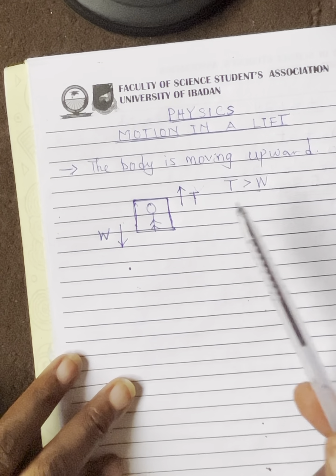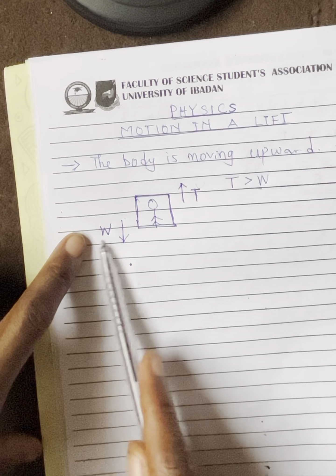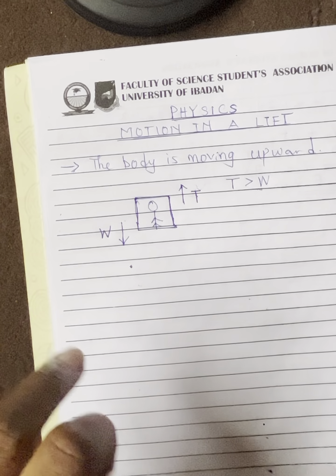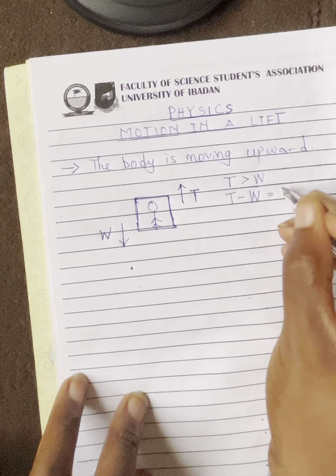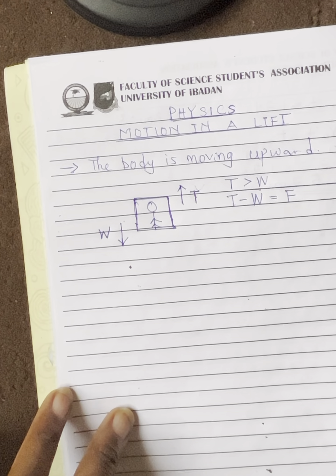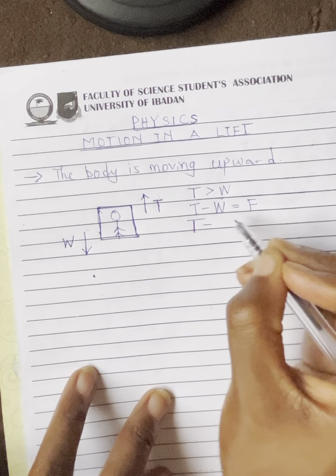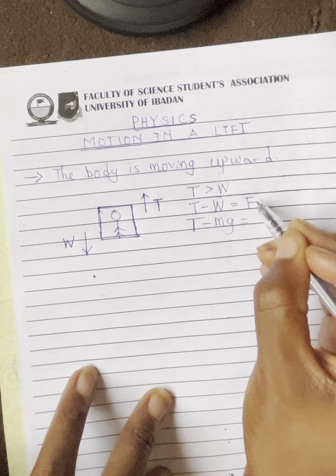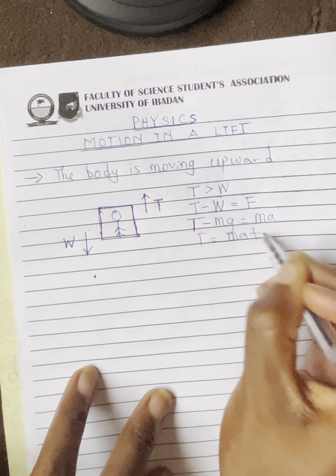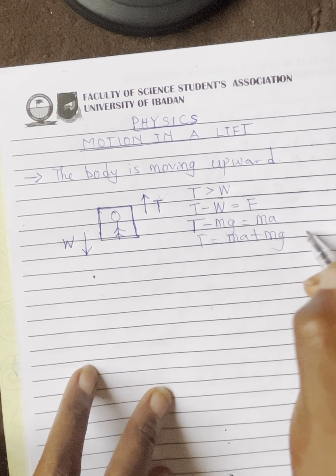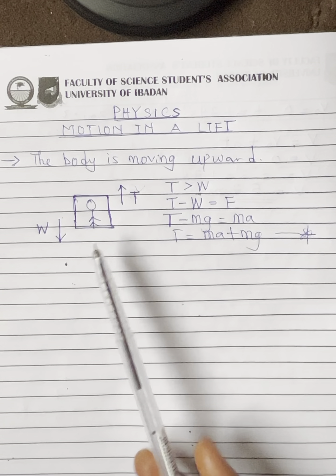So if I want to calculate the force that makes the body accelerate upward, I subtract the weight from the tension: tension minus weight equals the accelerating force. So tension minus mg equals ma, then T equals ma plus mg. This is the equation we use when the body is moving upward in a lift.